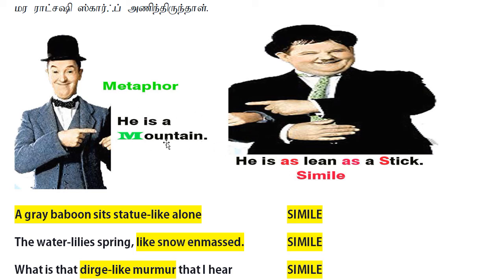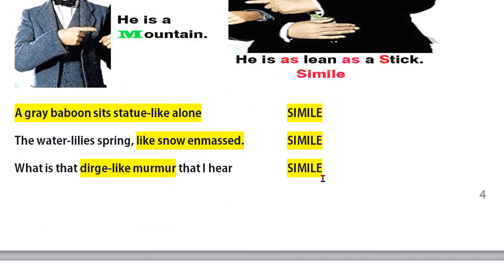For a simile: 'He is a mountain' is a metaphor, but 'he is like a mountain' is a simile, using 'like' or 'as.' For example: 'A grey baboon sits statue-like' — that is a simile. 'The water lilies spring-like' — that is a simile. 'What is that dish-like murmur?' — that is also a simile.